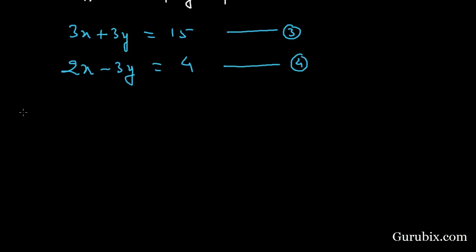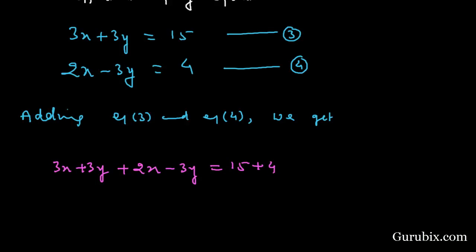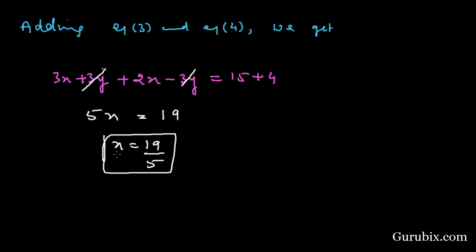Now we shall add equation 3 and equation 4. We get: 3x + 3y + 2x - 3y = 15 + 4. The -3y and +3y cancel, leaving 5x = 19, which means x = 19/5.